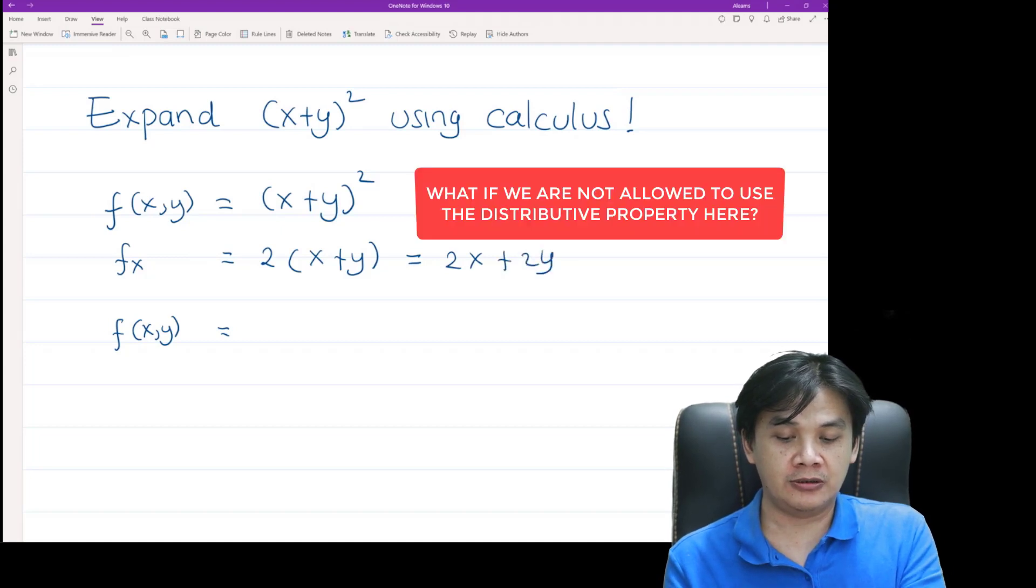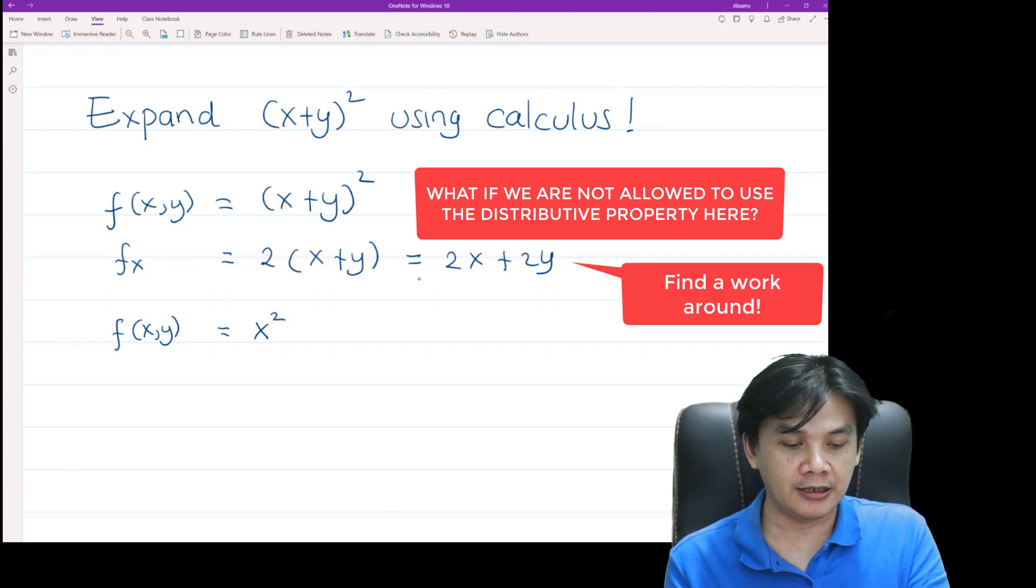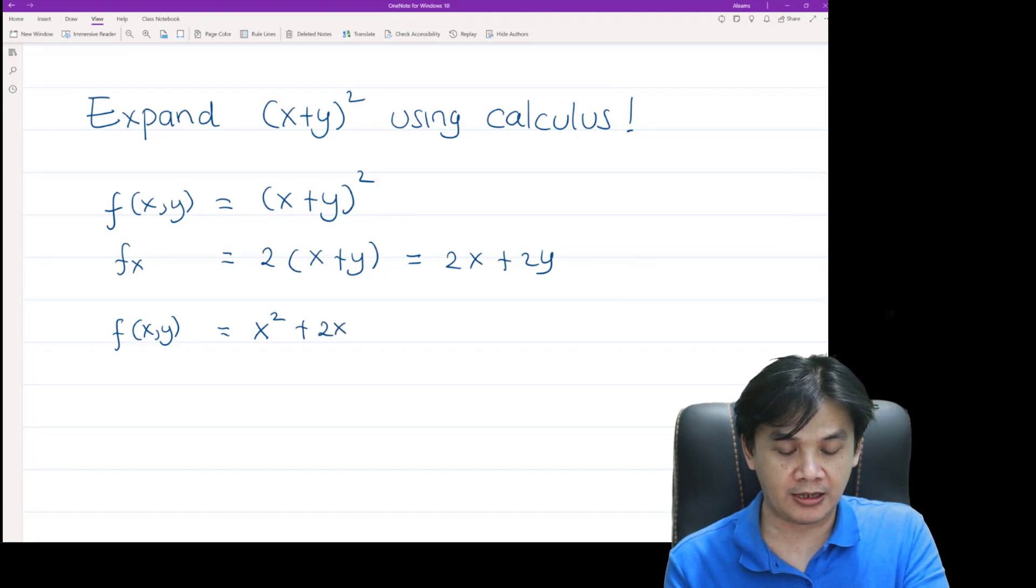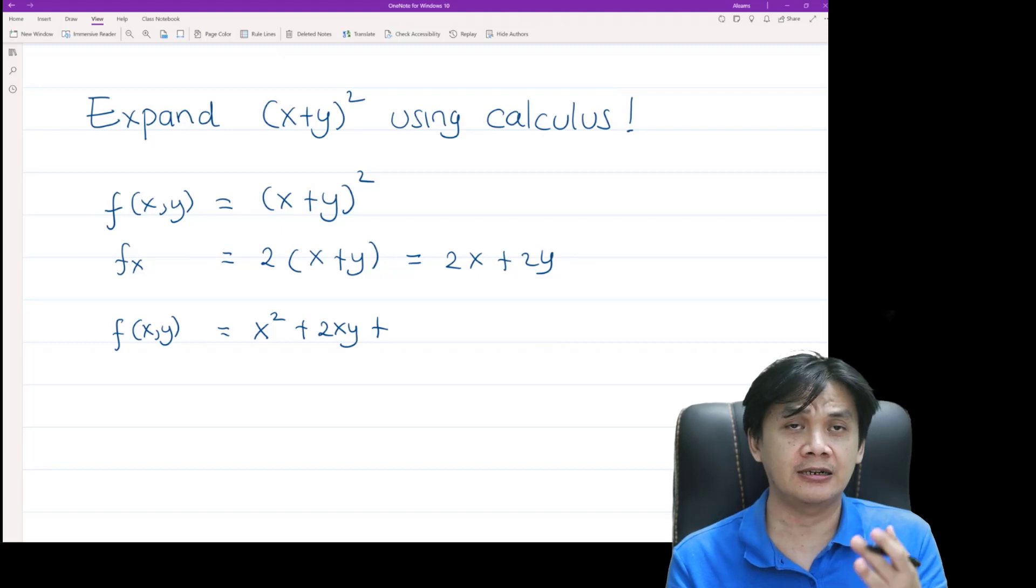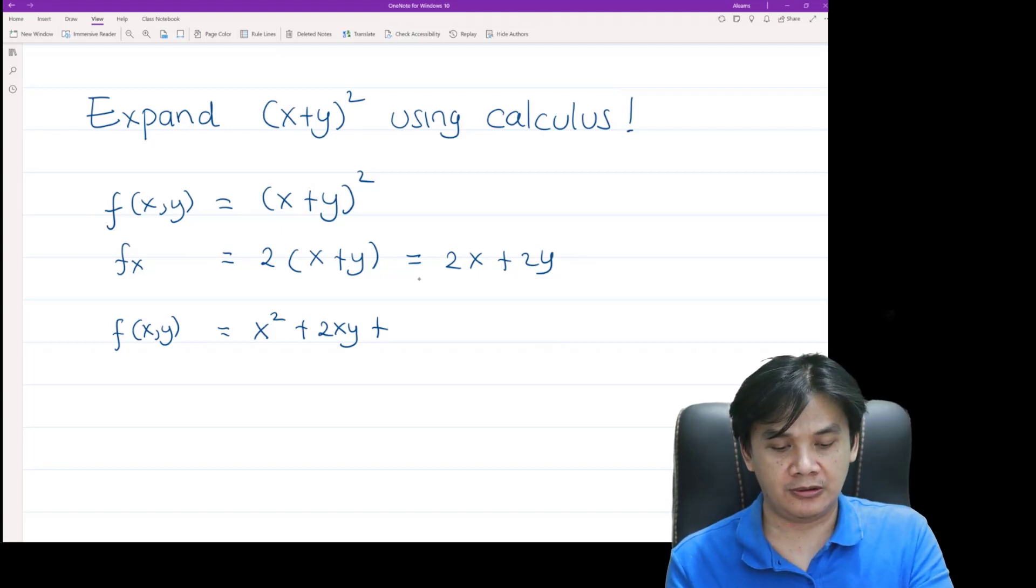So f will be the anti-derivative of this guy, which is x², and then plus the anti-derivative of this with respect to x, which is 2xy, and then plus a function in y variable. So let's call it h(y). So that is our f.